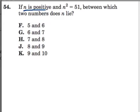In this problem, n is positive and n to the second power is 51. They're clarifying that it's positive because though you might not have thought about it, if I ask for the square root of 4...